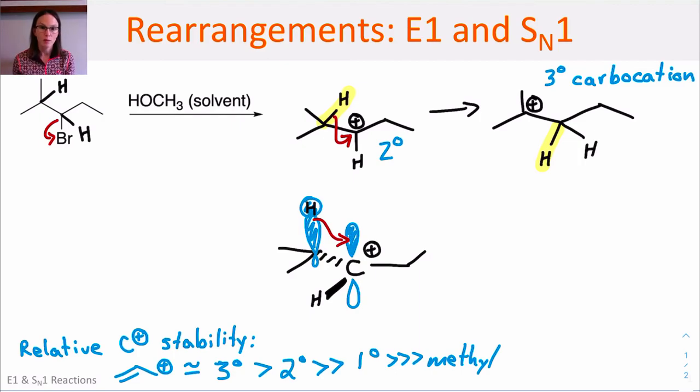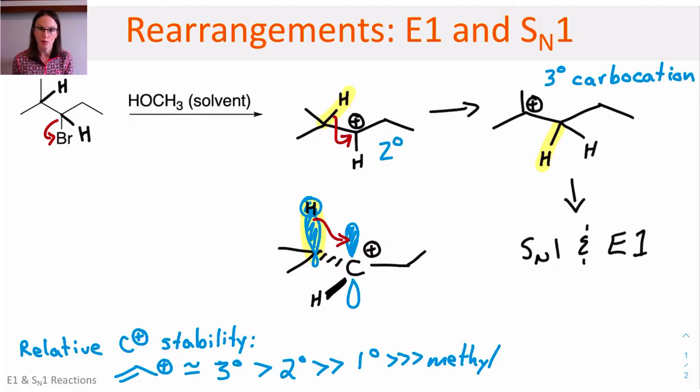The bottom line: remember that carbocations are unstable. When they form, they will rearrange if there's a possibility of leading to a more stable species. That can lead to mixtures of products, as we've seen in E1 and SN1 reactions. Always look for those rearrangements first at the point of generation of that carbocation.